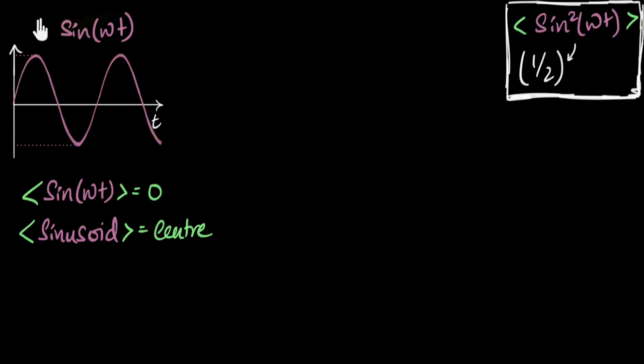So in general, we could say, whenever you have a sinusoidal function, the average value of a sinusoid in general is at the center. Here the center was zero because the sinusoid is centered around zero. But in general, you can have sinusoids however you want, and we can say that its mean value or average value has to be at the center.